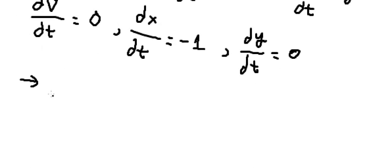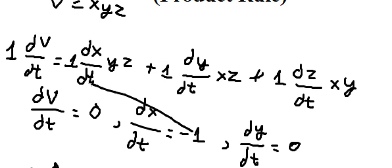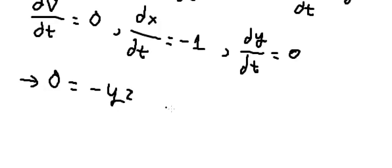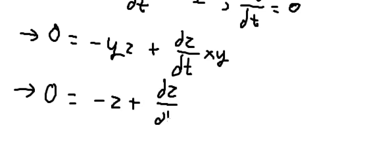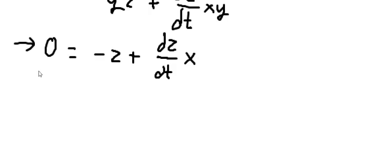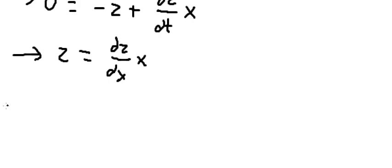We substitute the values: dV/dt is zero, dx/dt is negative 1, and dy/dt is zero. We need to find dz/dt. We simplify both sides — we can see that the y terms cancel — and we move terms to the left side. We then divide both sides by x to isolate dz/dt.